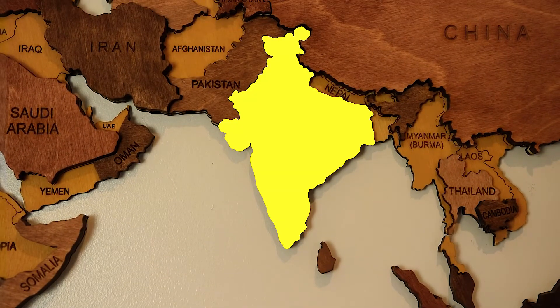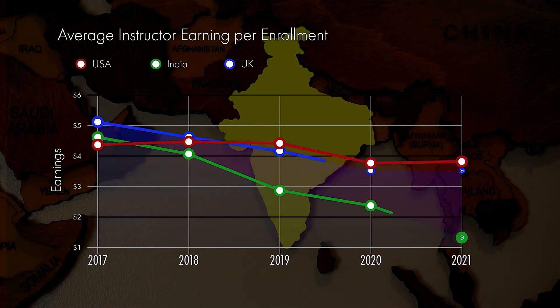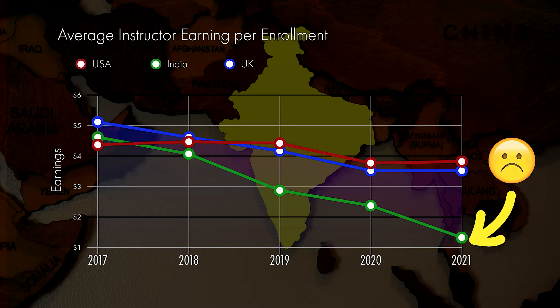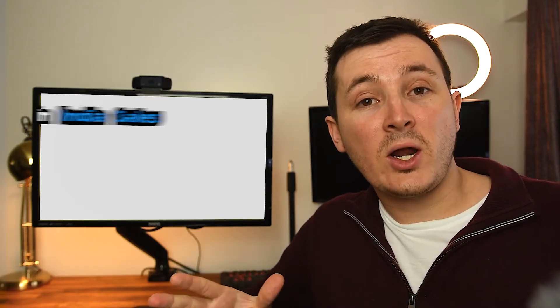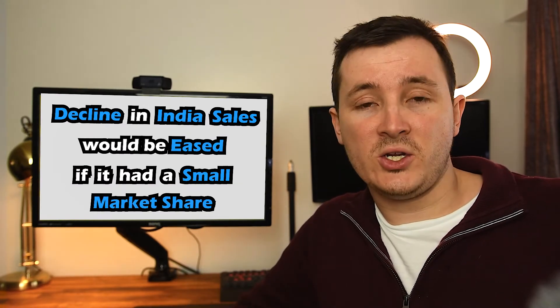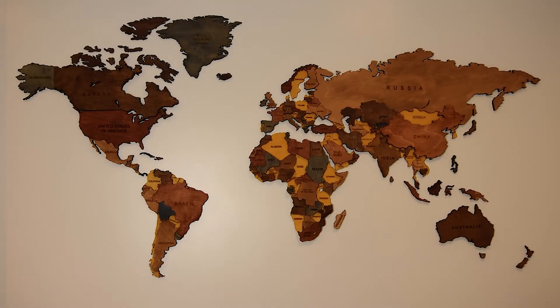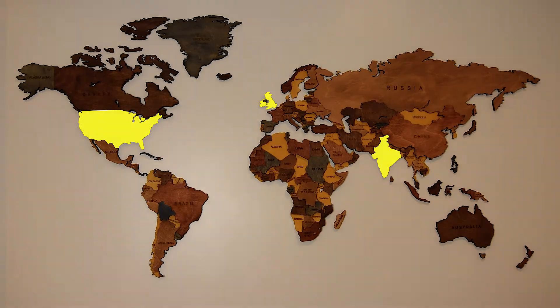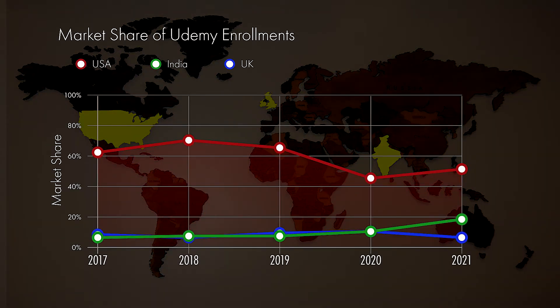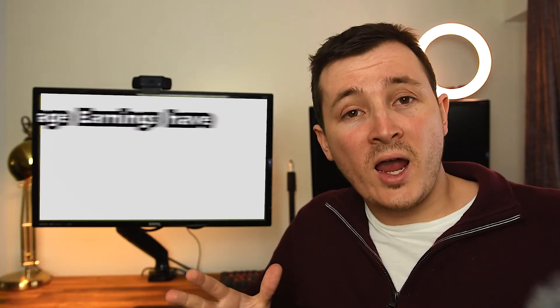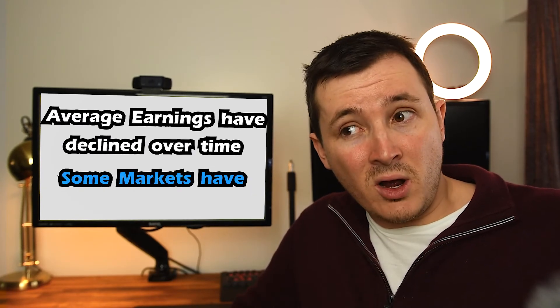In most cases there is some form of decline over the whole lifecycle of these courses, some more than others. The India statistic looks to be the most severe, declining from $4.49 to $1.19 — just 26% of what it was five years ago. Now, 80% of enrollments across the world came from just three countries. The US share declined from 2019 to now, where India has taken what the US lost, and the UK share remained about the same. So if you've noticed a general decline in your earnings, it's likely because the average earning per enrollment has declined, and markets like India have declined a lot while also taking a larger share of all your enrollments.